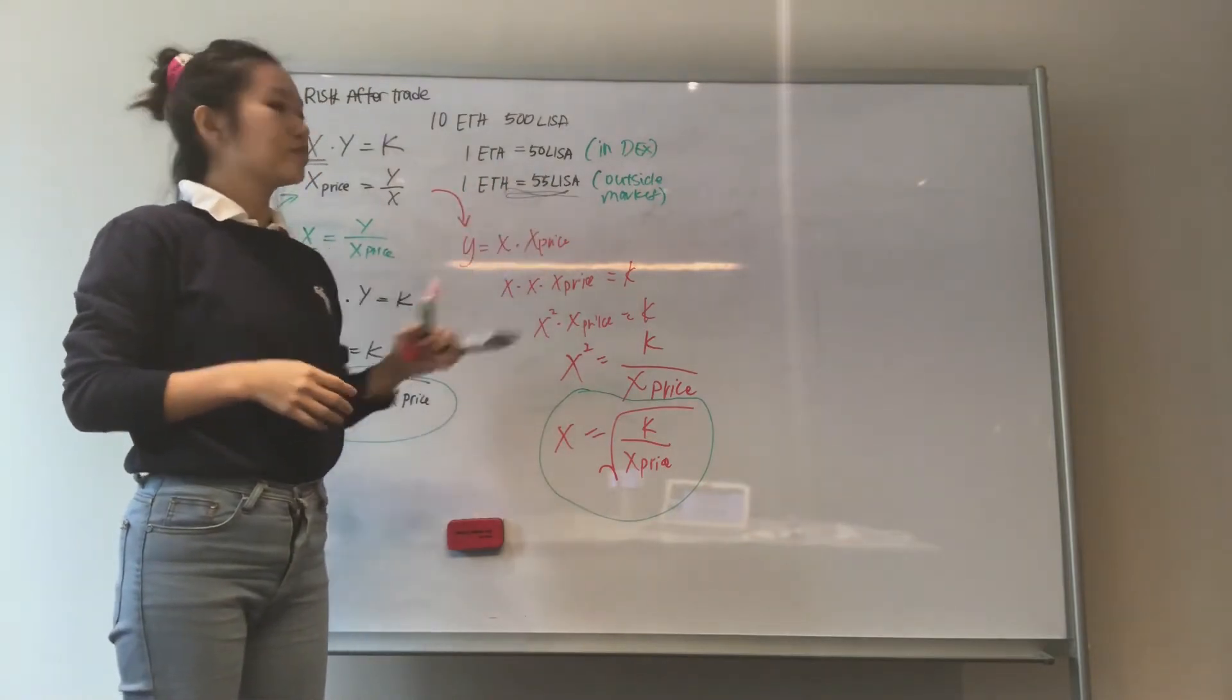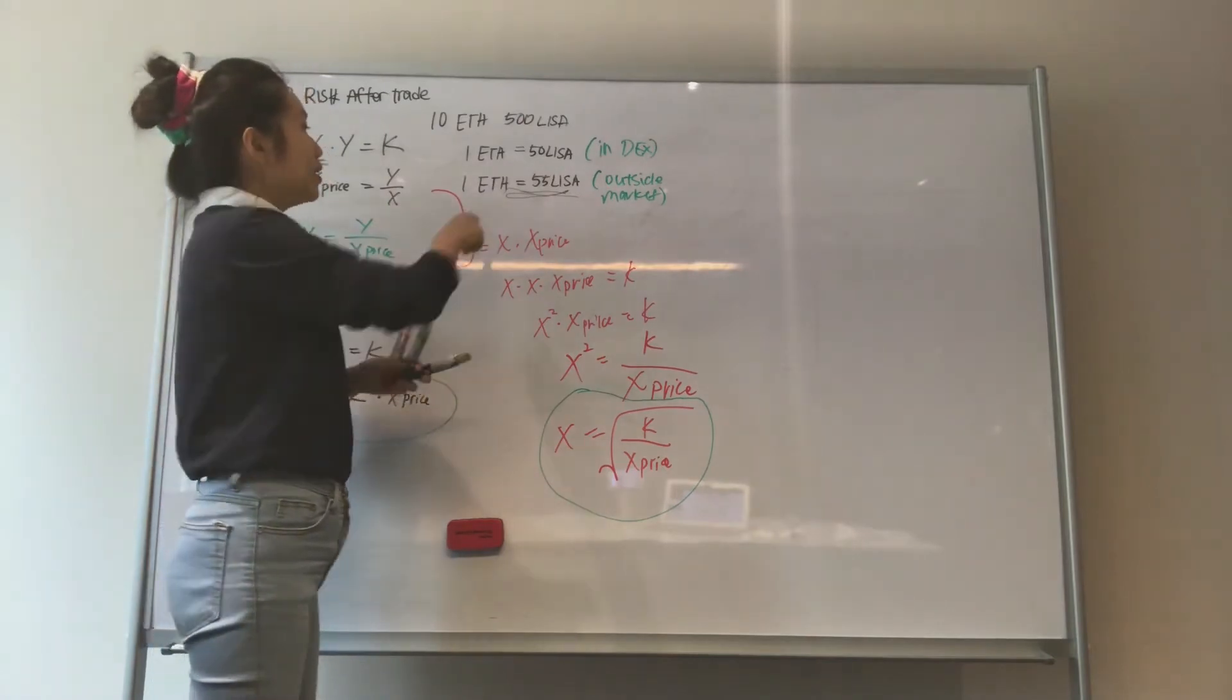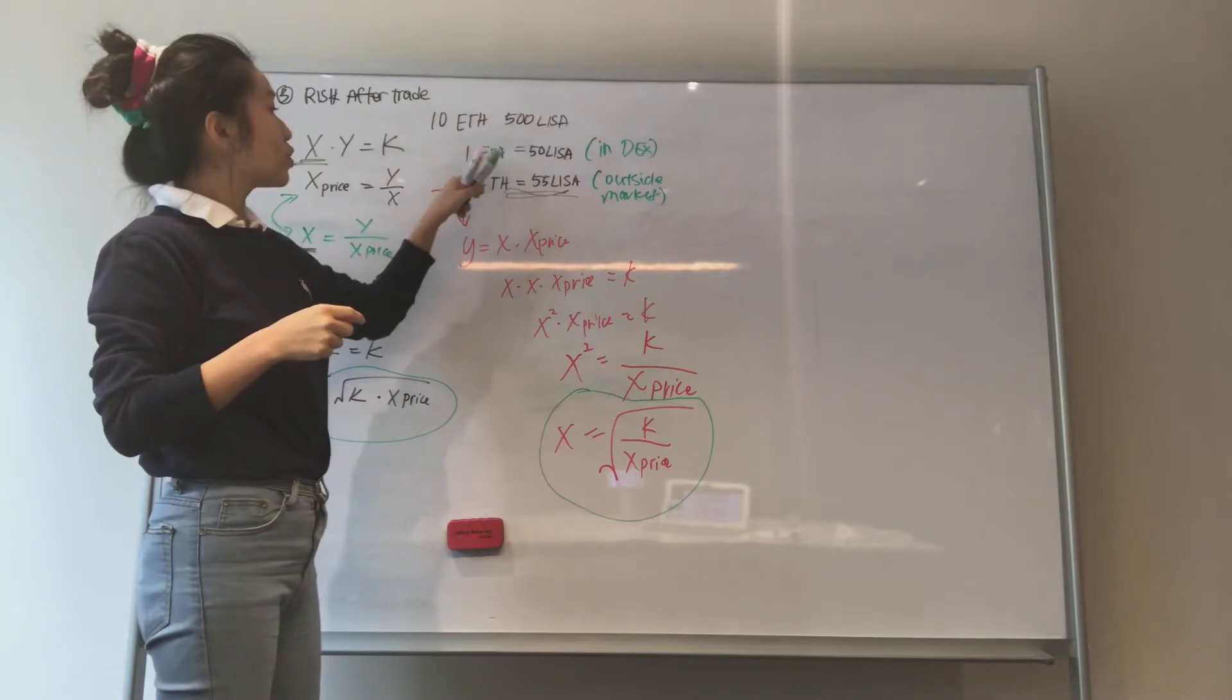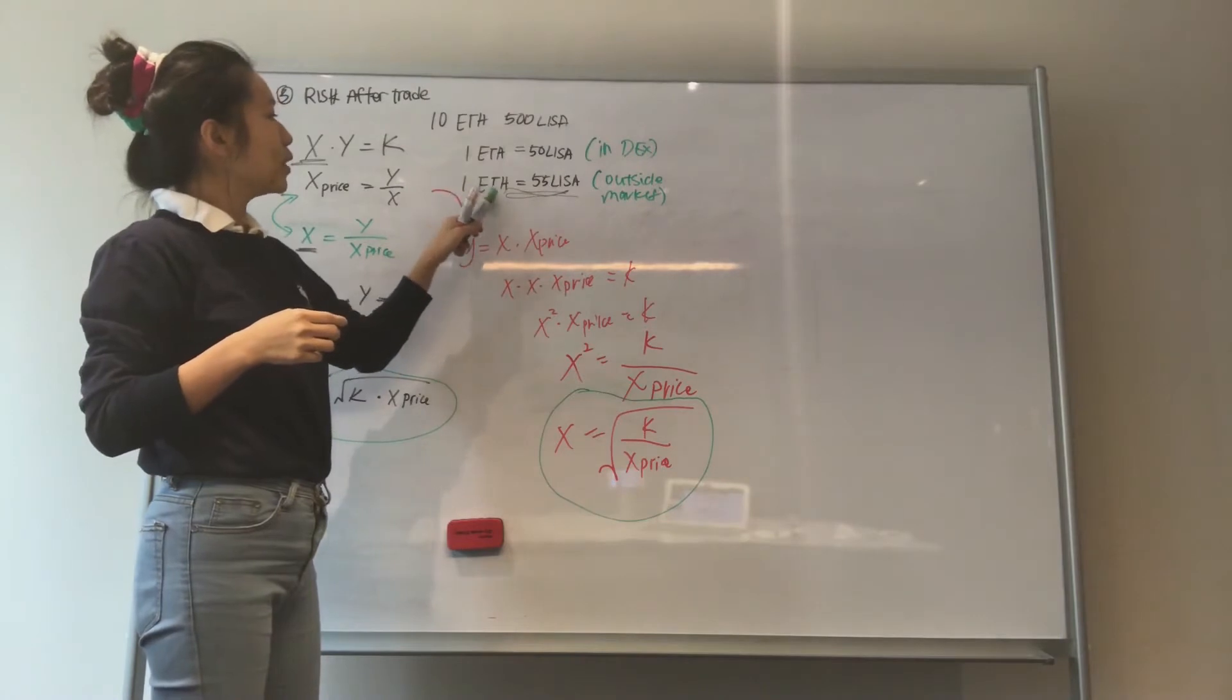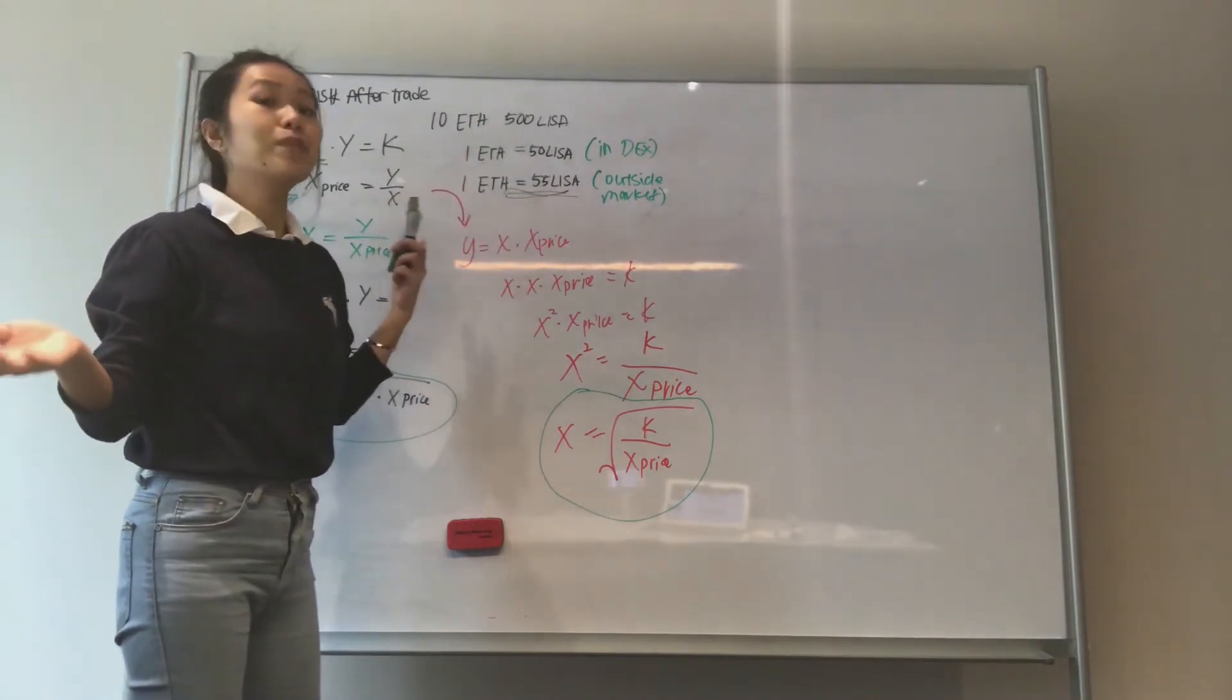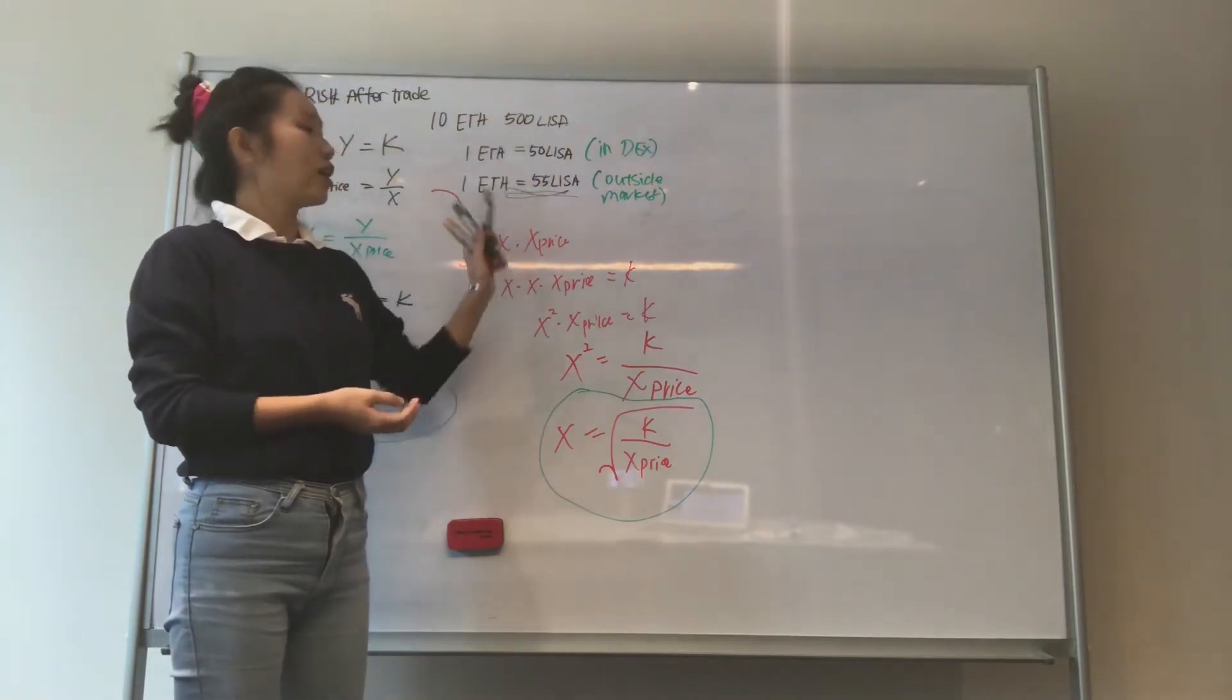So there's something to bear in mind. Now, what happens? You realize, what can I do? I can just go in, give 1 ETH, buy 50 LISA tokens, then go to the outside market, go to Binance, give them that 1 ETH and get 55 LISA tokens. So in this process, I just do a little switch and suddenly get 5 LISA tokens for free. That's free money. These are called arbitragers, they do arbitrage trading. They find the difference in two different places and trade to make the difference. That's how they earn money.